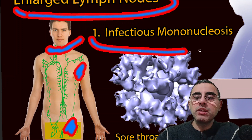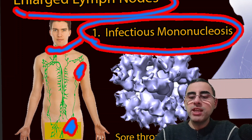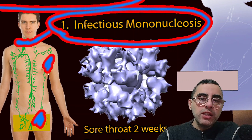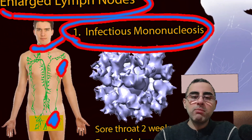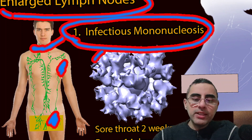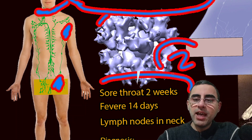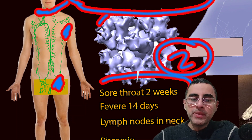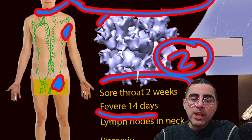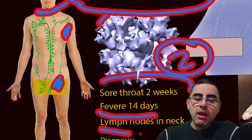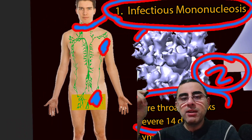First we think about infectious mononucleosis, especially if the patient is younger. Infectious mononucleosis is a viral infection caused by Epstein-Barr virus. It starts with severe sore throat lasting around two weeks, fever is also present for around two weeks, and lymph nodes are tender and enlarged.